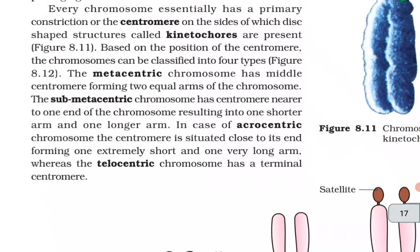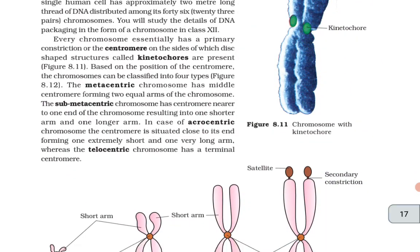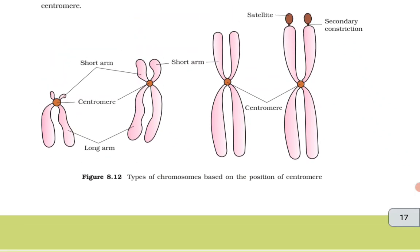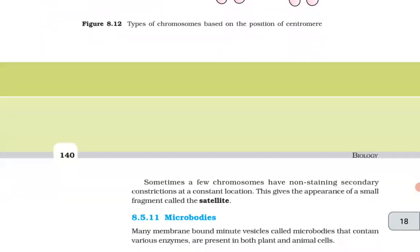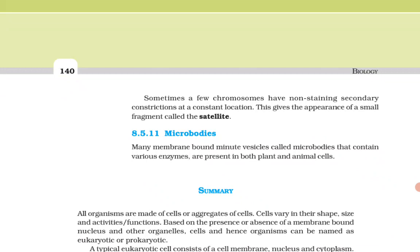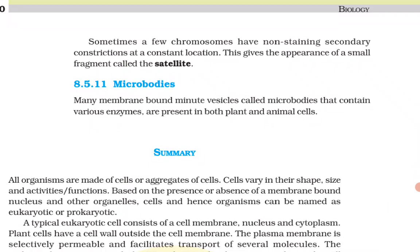Based on the position of the centromere, chromosomes can be classified into four types. The metacentric chromosome has the centromere in the middle, forming two equal arms. The submetacentric chromosome has the centromere nearer to one end, resulting in one shorter and one longer arm. In the acrocentric chromosome, the centromere is situated close to its end, forming one extremely short and one very long arm. The telocentric chromosome has a terminal centromere. Sometimes a few chromosomes have a secondary constriction at a constant location, giving the appearance of a small fragment called a satellite.